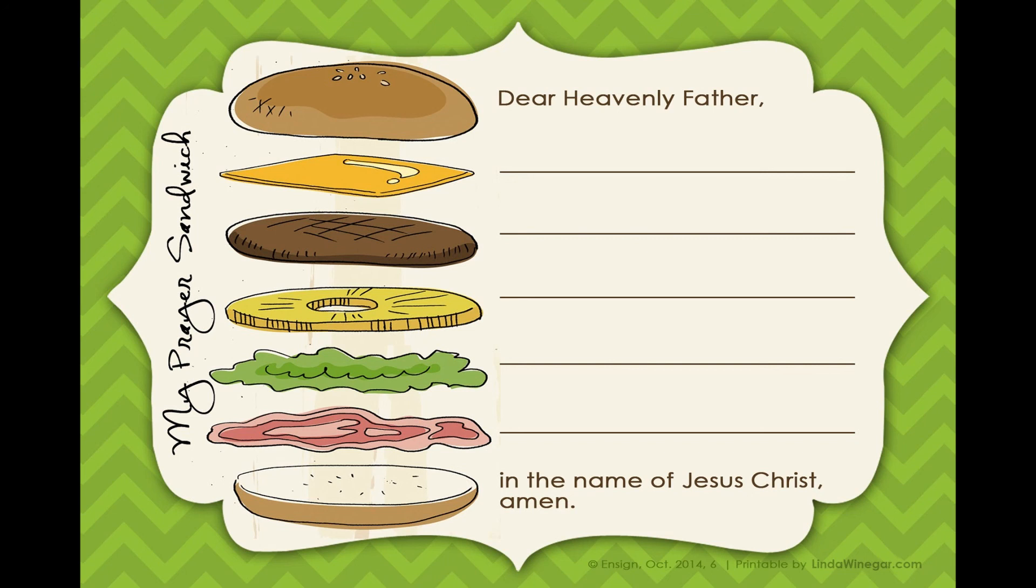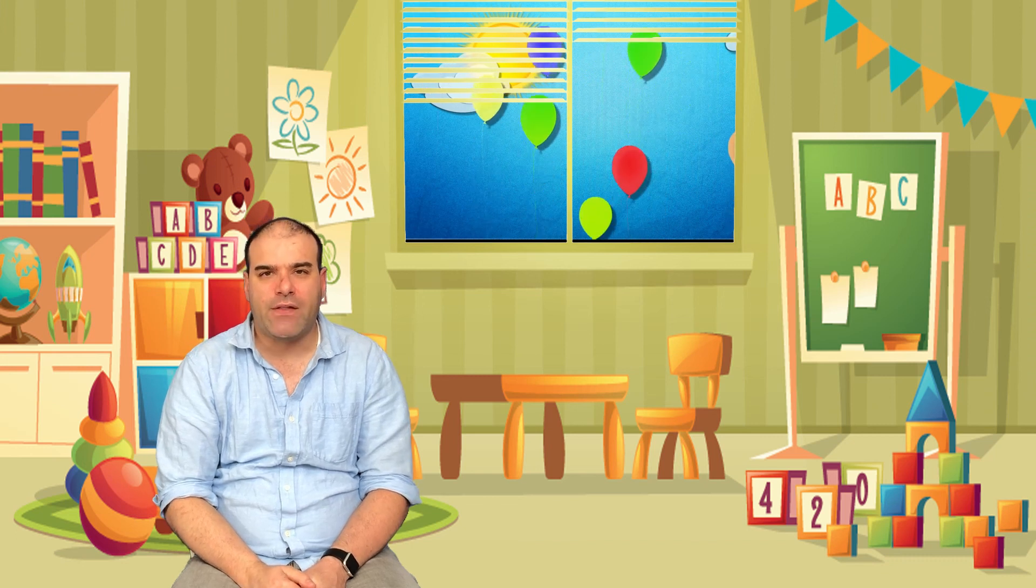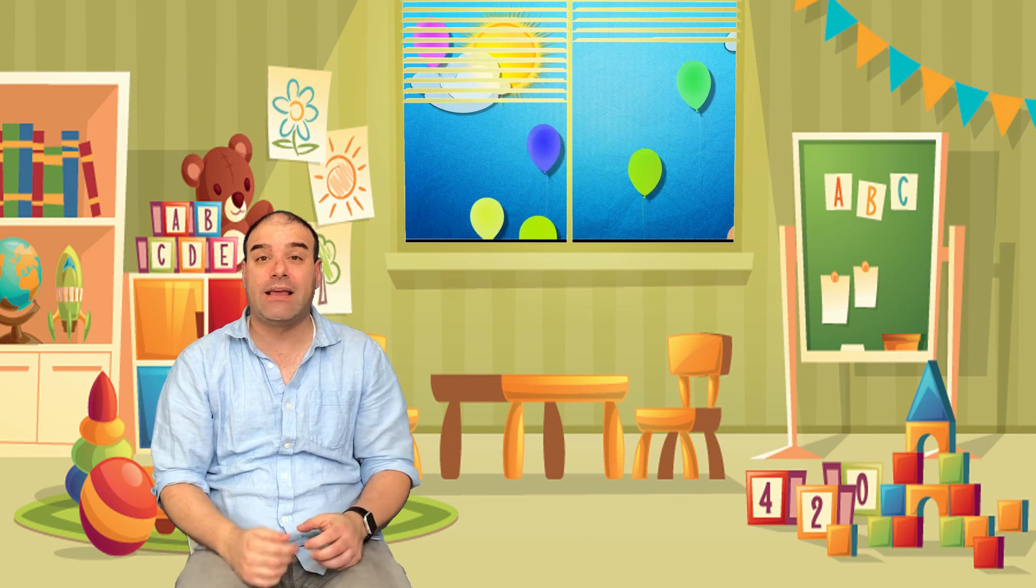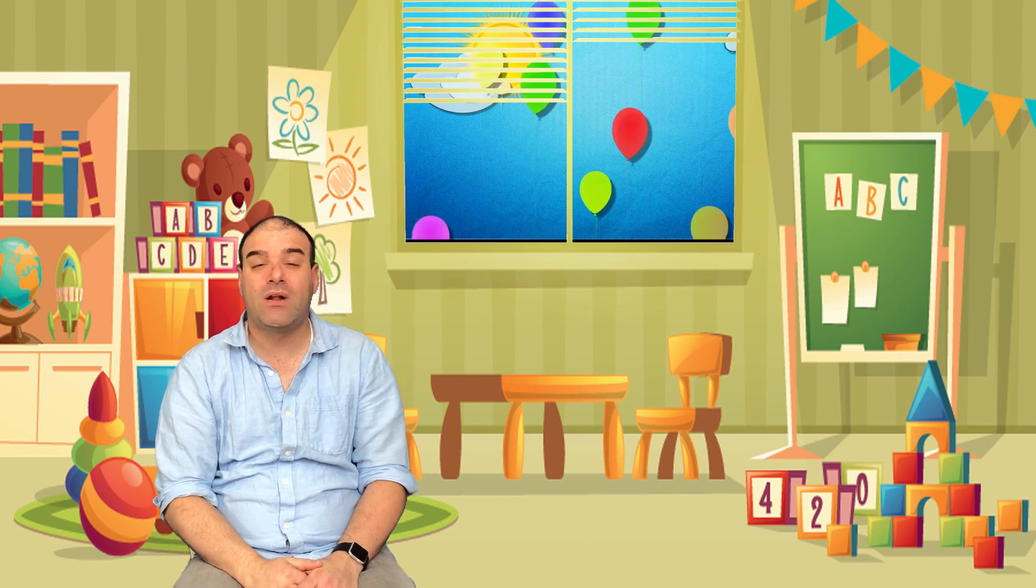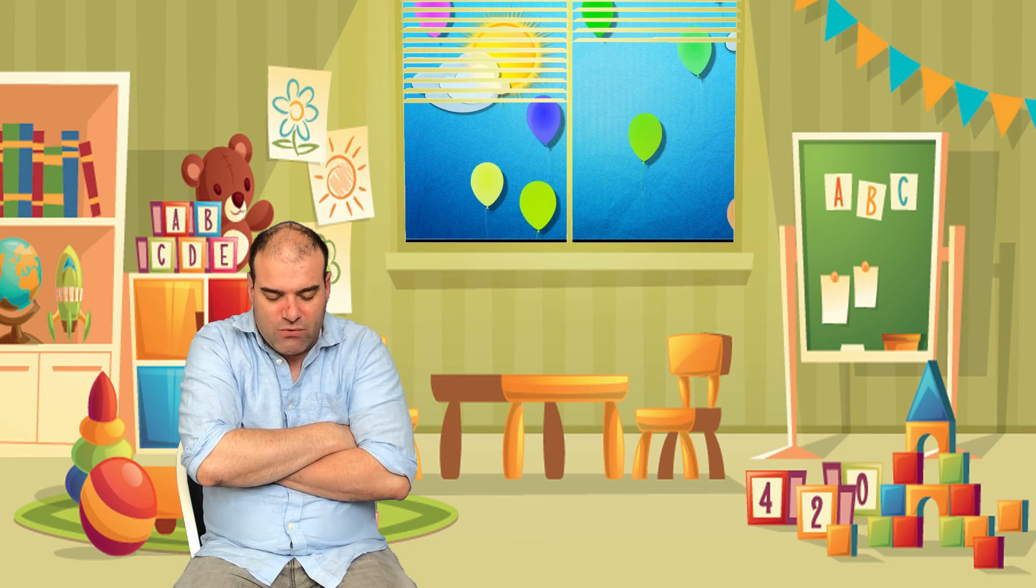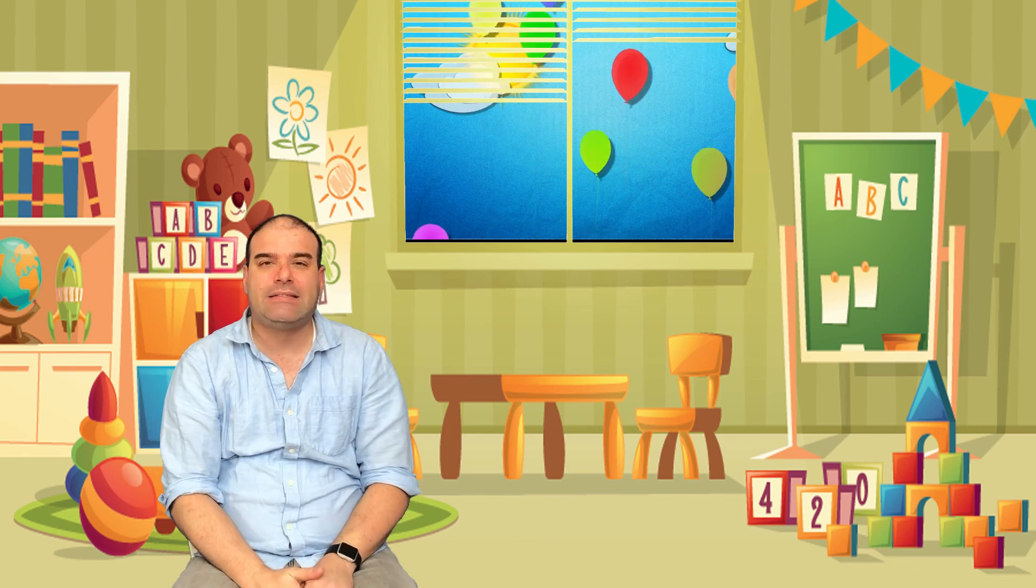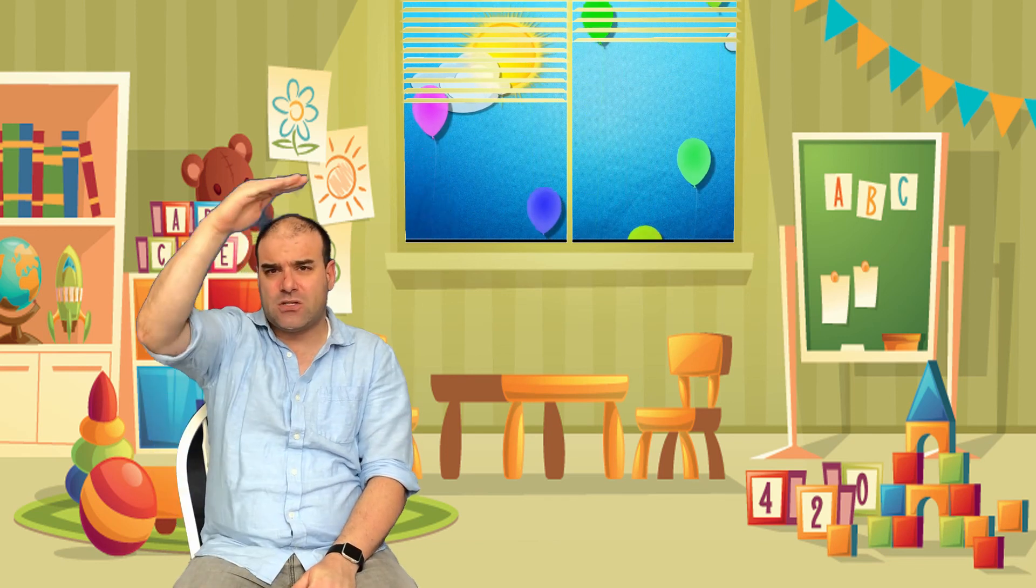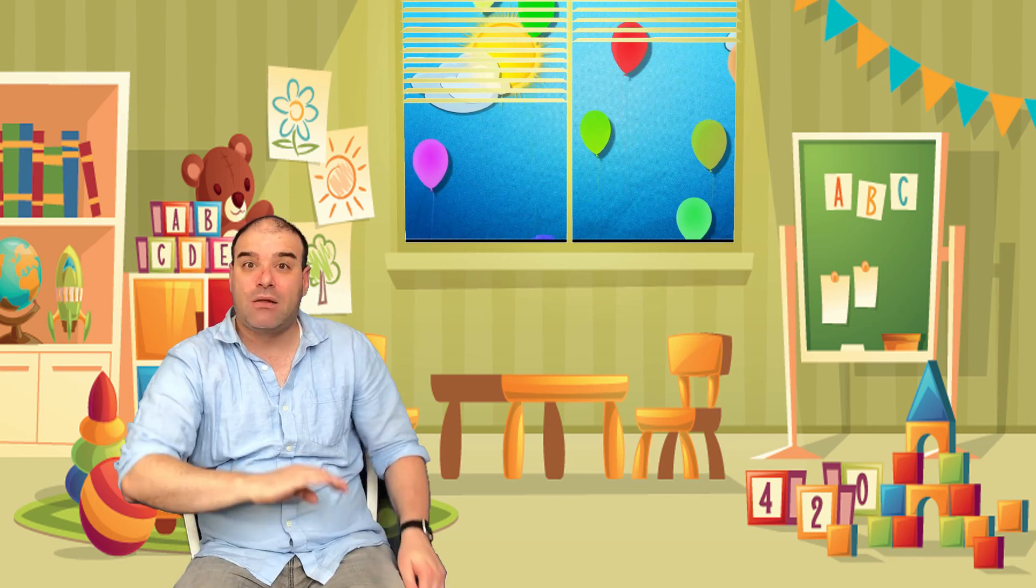So the first piece of bread in prayer is we say, Dear Heavenly Father. We start out by addressing Heavenly Father, by telling him, Hey, Heavenly Father, we want to talk with you. So we bow our heads, and we fold our arms, and we say, Dear Heavenly Father. That's the first piece of bread.